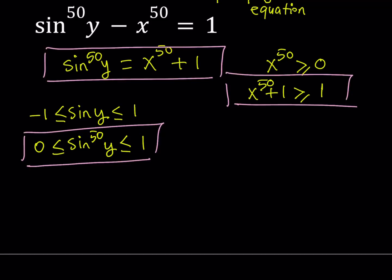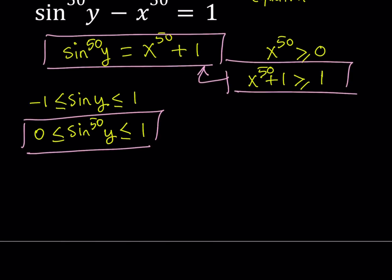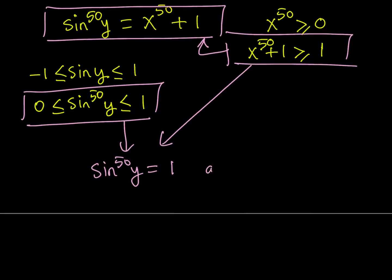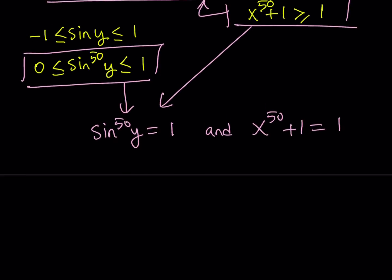And the other inequality tells me that the minimum value is 1. So how is that possible that one side is greater or equal to 1, the other side is less than or equal to 1? The only way they can intersect is if they're both equal to 1. So these two inequalities imply two equations. First, sine y to the 50th power equals 1. And x to the power of 50 plus 1 equals 1. They both have to equal to the same number.